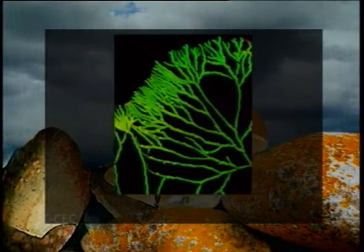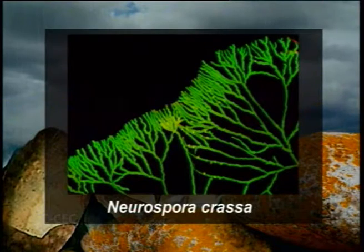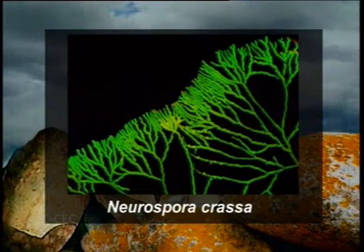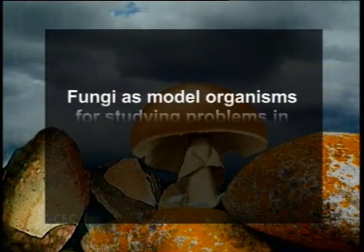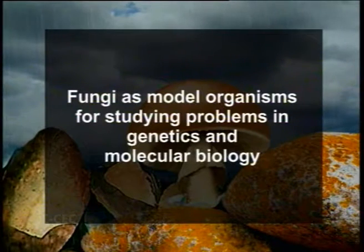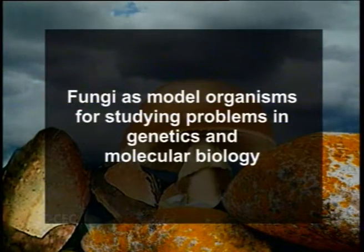Fungi can also be used as test organisms. Since fungi have a short life cycle and a fast growth rate, many are used as research tools for understanding various life processes. They are used to detect the presence of certain specific compounds — for example, Neurospora crassa is used as a detector for the presence and amount of vitamin B in a given sample. Many fungi also produce colored spores used as specific dyes. Yeasts in particular are important model organisms for studying problems in genetics and molecular biology.